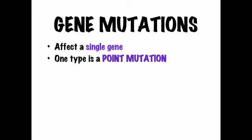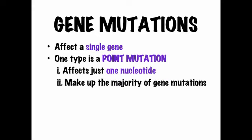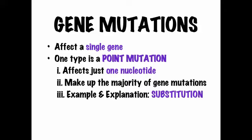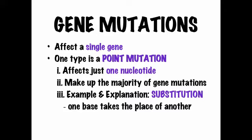One type we really talk about is called a point mutation, and this is something that affects just one nucleotide. Most mutations in general are point mutations where just one single letter is affected. The example we're going to give is something called substitution — where one base takes the place of another. Imagine if you were writing down the code and you accidentally wrote a T instead of an A. That's a substitution.